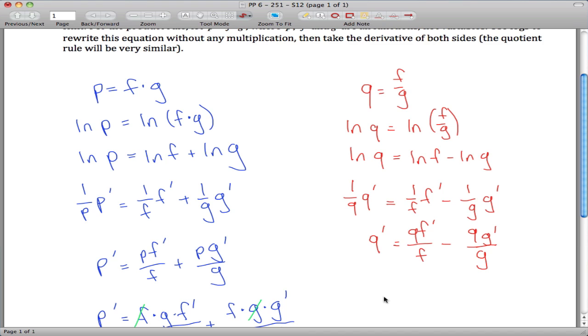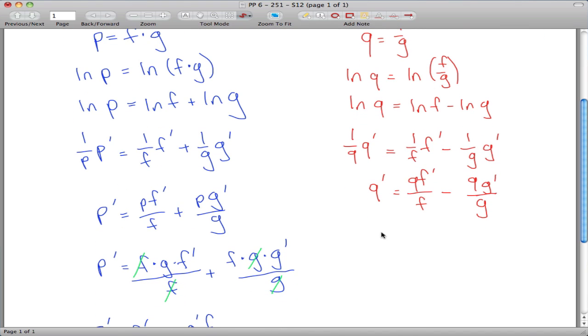but then you remember that Q is F over G. So we got Q prime is equal to F over G times F prime over F minus F over G times G prime over G,